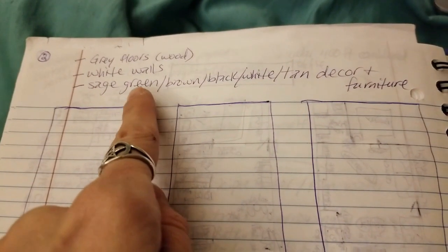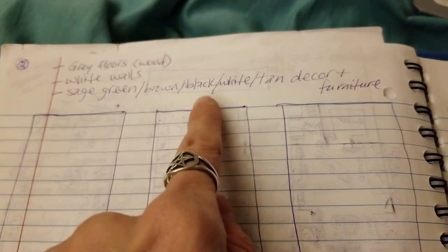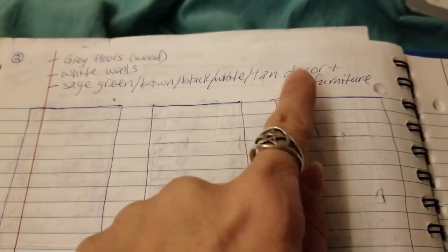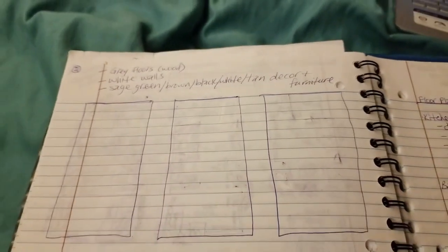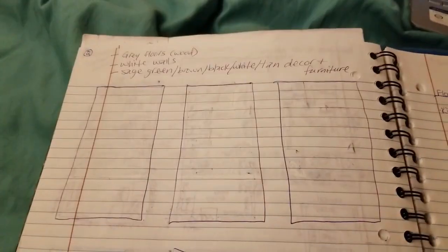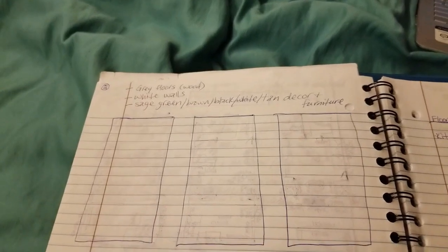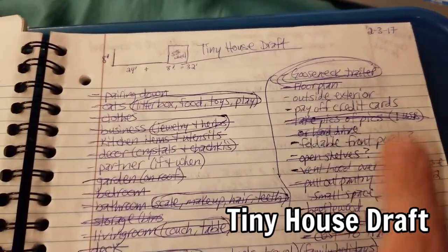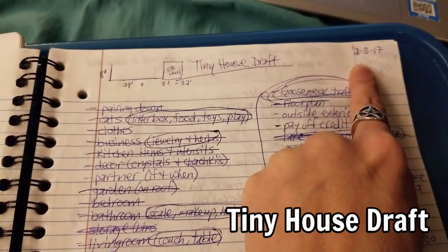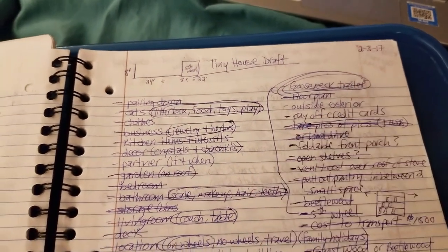Even my colors were different. I was going to do sage green, brown, black, white, and tan for decor and furniture, but that quickly changed to teal, white, and different kinds of browns. So this is my tiny house draft. As you can see, I started on February 3rd of 2017.